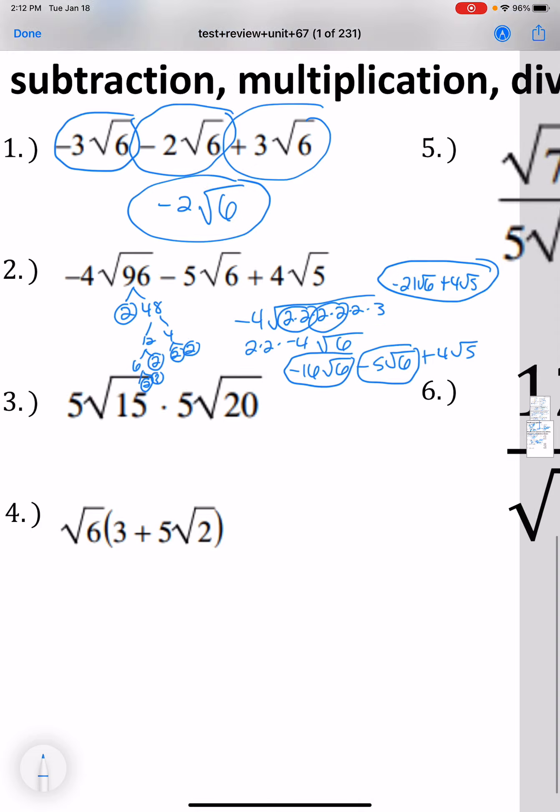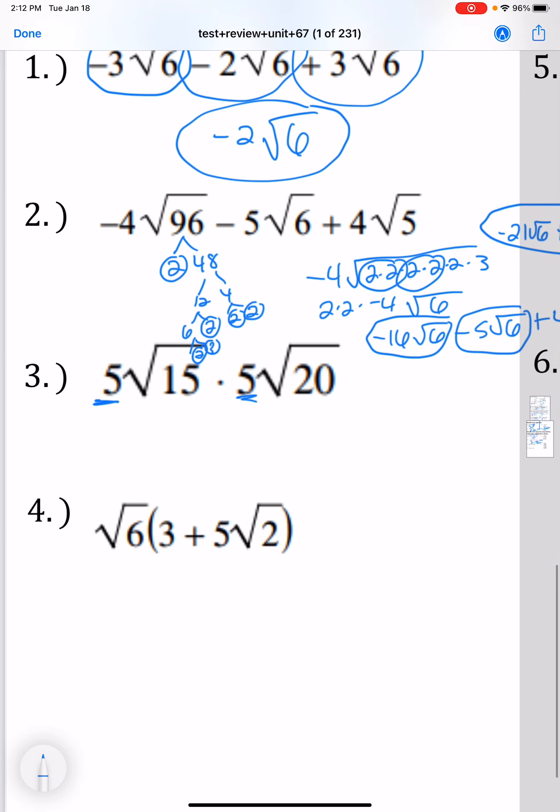For number 3, that is a multiplication symbol. For multiplication, we multiply the numbers on the front to make 25, and the numbers on the inside to make 300. This is not a good answer. We need to simplify what's inside, which would be 10·3, 10, and 10, and both of those break off into 5 and 2. So we have 25 times the square root of 5 times 5 times 2 times 2 times 3. One 5 comes to the outside, and one 2 comes to the outside.